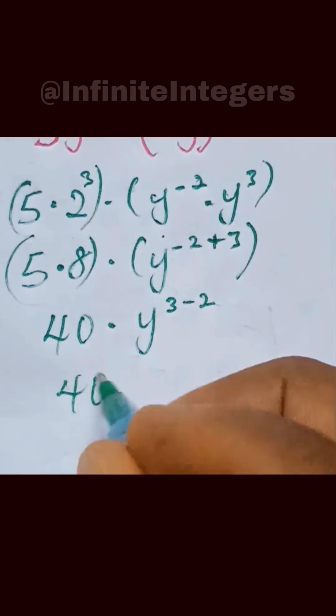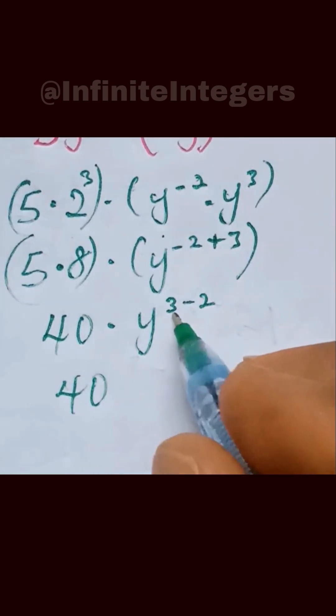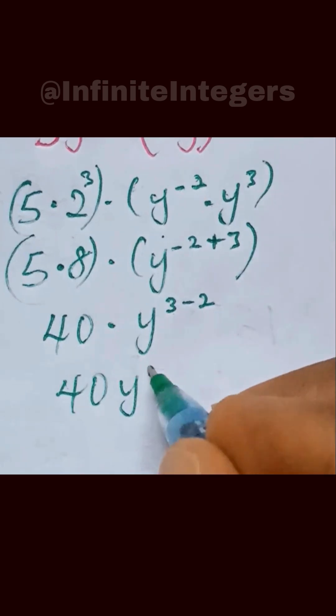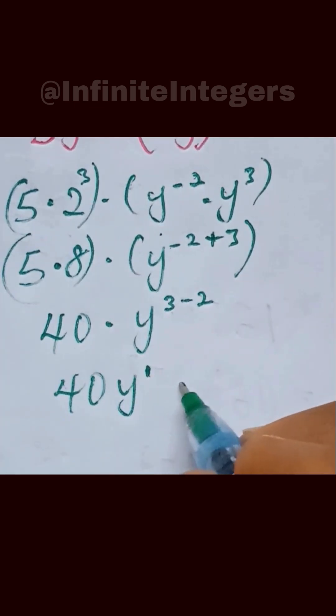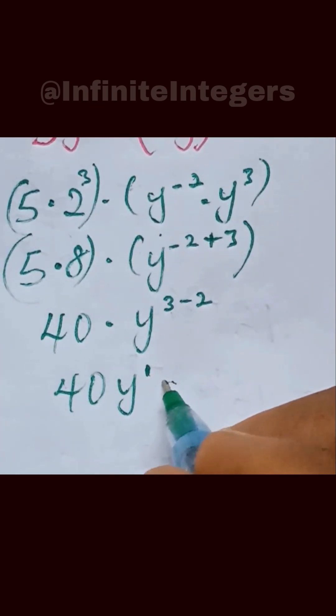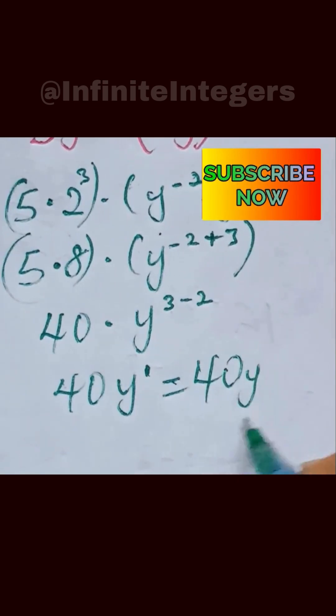And we now have 3 minus 2. We have 40y power 1. 40y power 1 is the same thing as 40y.